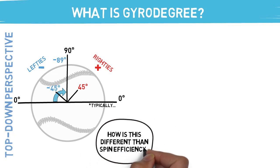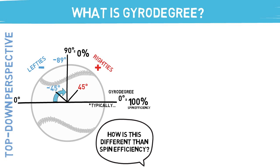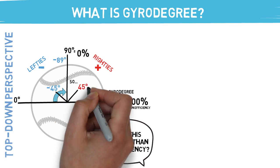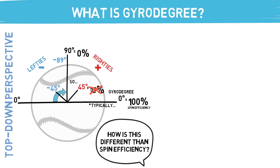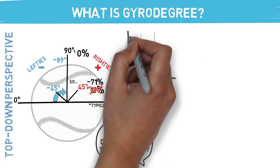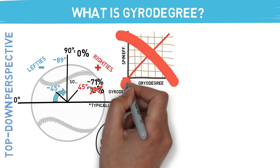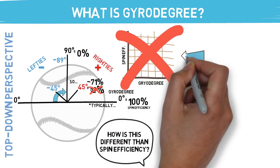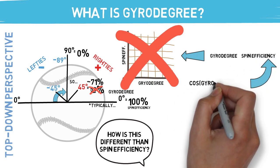So how is this different than spin efficiency, you may ask? If you watched my previous video on gyro spin, you'd understand that a pitch with a gyro degree of 0 would have a spin efficiency of 100%, and a pitch with 90 degrees gyro degree would have a spin efficiency of 0%. So after looking at that, you would assume that a 45 gyro degree would equal 50%, right? Wrong. It actually falls around about 71% spin efficiency, which may be misleading if you're working on developing a pitch. What this means is that the relationship between spin efficiency and gyro degree is not linear. And that's important. Spin efficiency is simply the cosine of the gyro degree times 100.